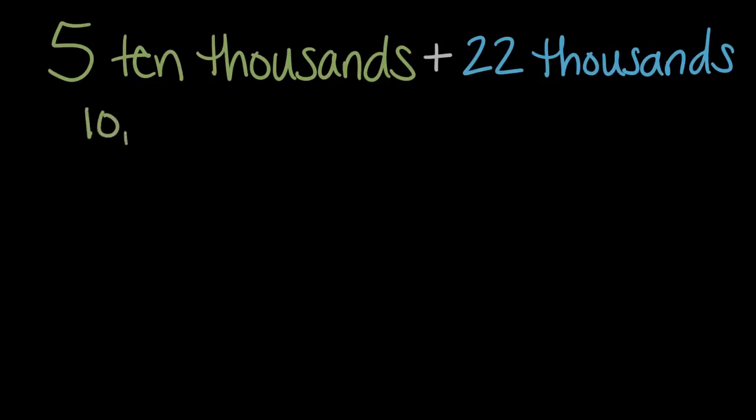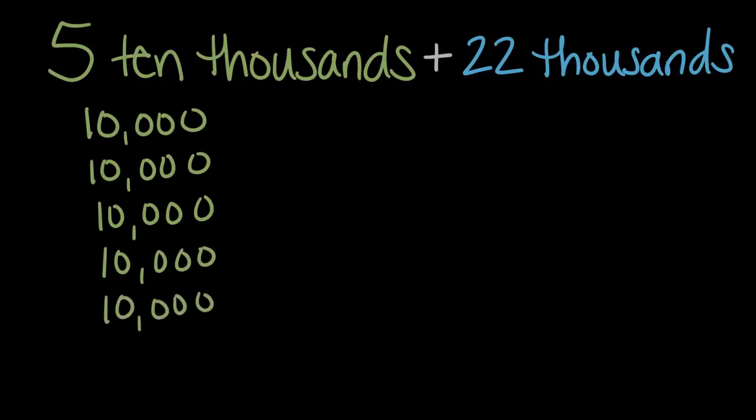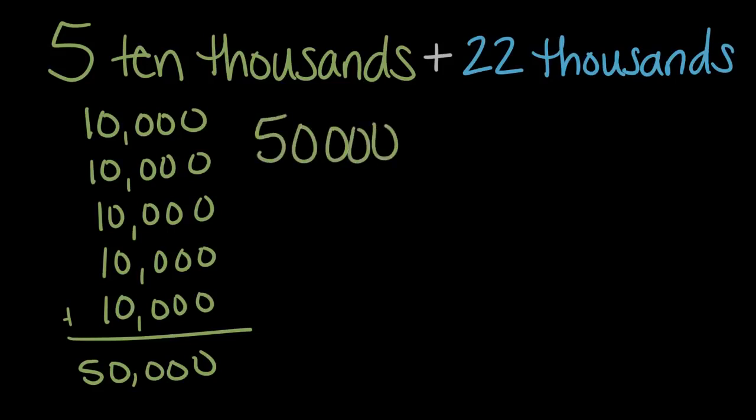If we had 10,000 five times, another 10,000, another, that's three, four ten thousands, and five ten thousands, that would be a total of 50,000. 10,000, 20, 30, 40, 50,000. So five ten thousands is 50,000. Let's write that up here, 50,000.